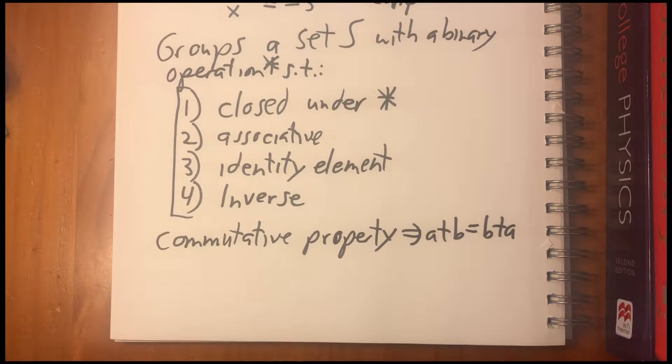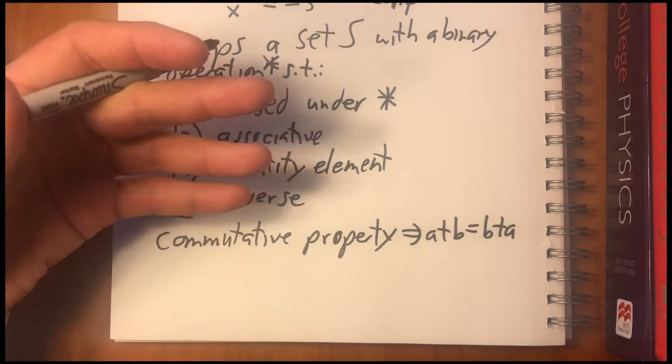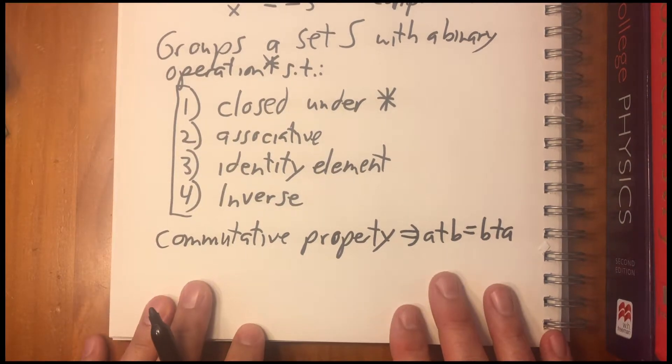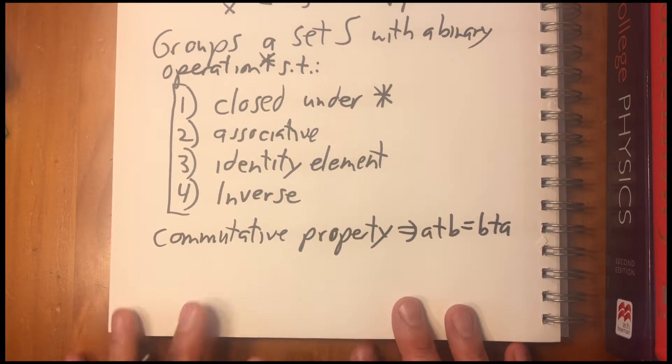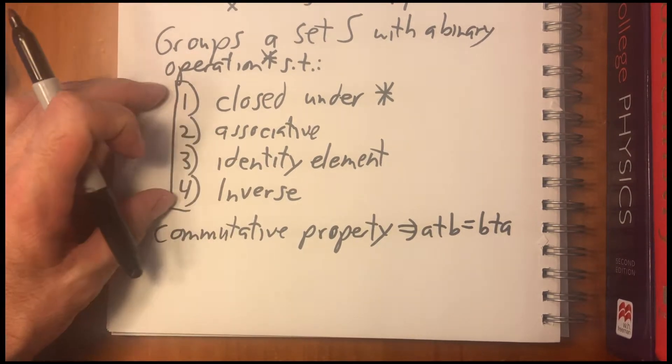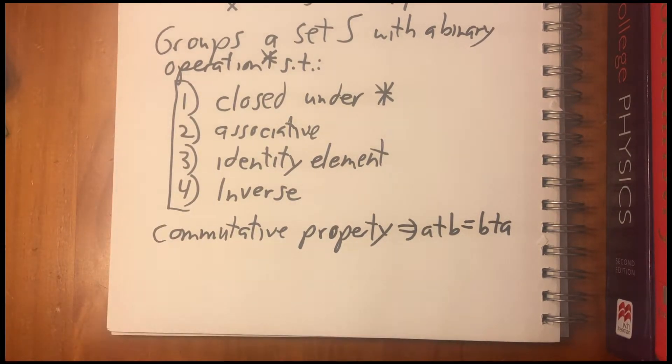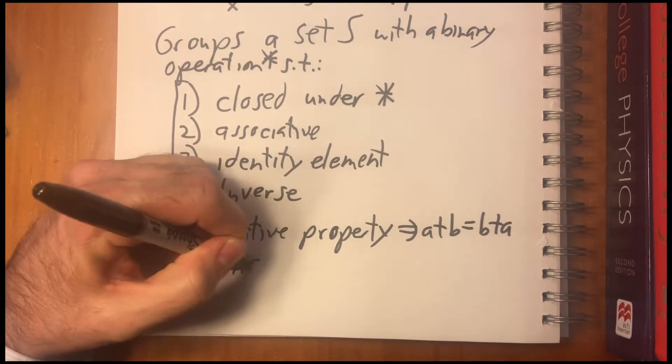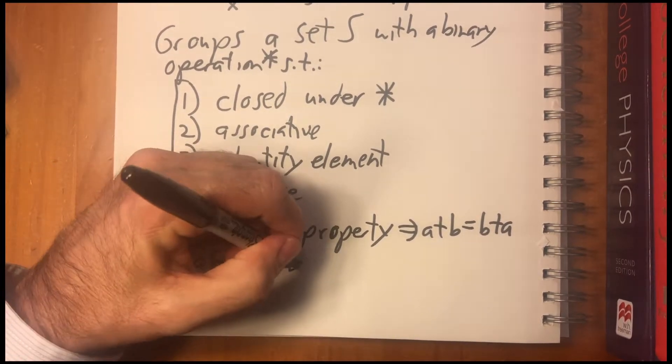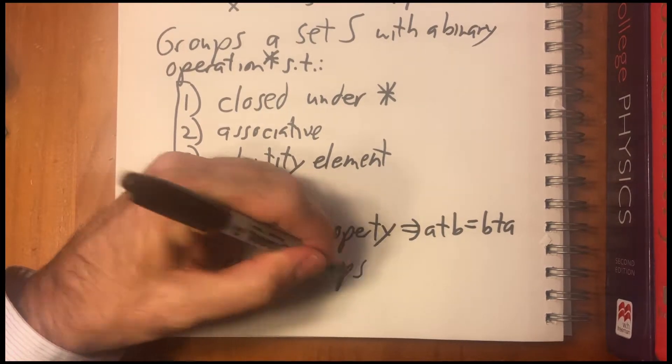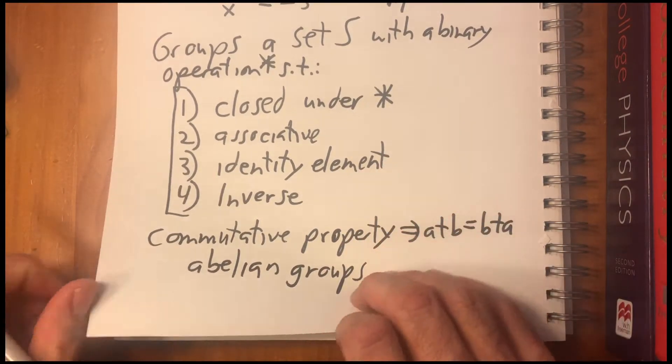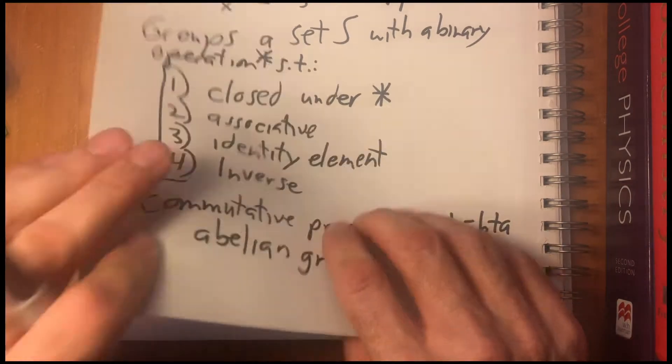And, commutativity is something that a lot of groups have, but it's not necessary. So that's an additional property that's not fundamental to a group. So there are commutative groups, or they're also called abelian groups. There's a mathematician named Abel that did a lot on that. That's why they're named after him. So abelian means commutative. Okay.